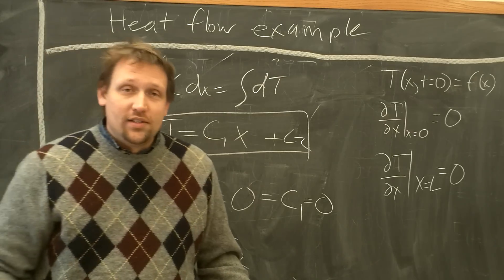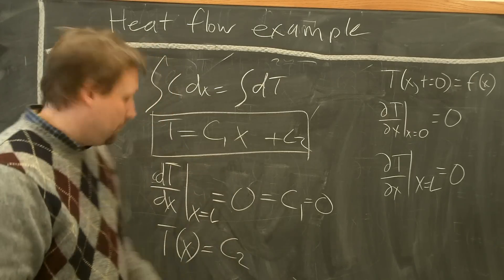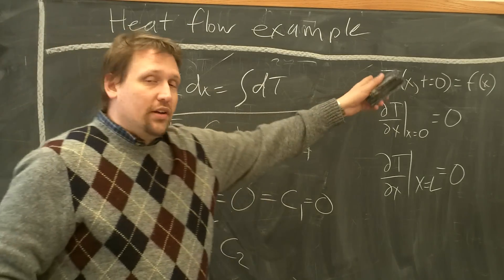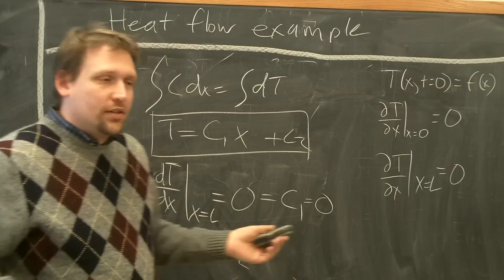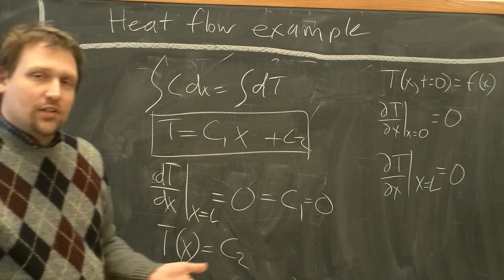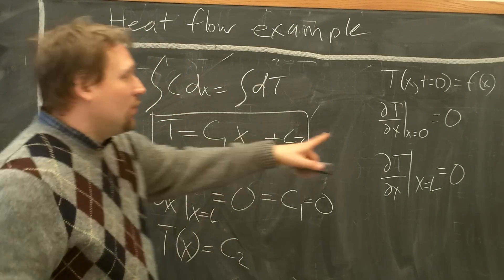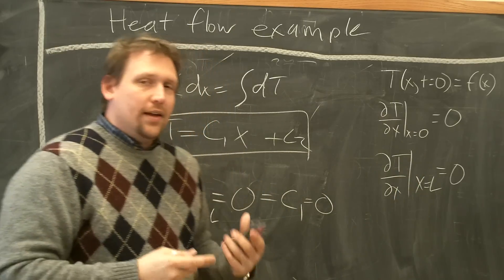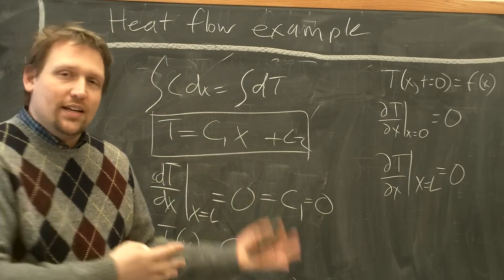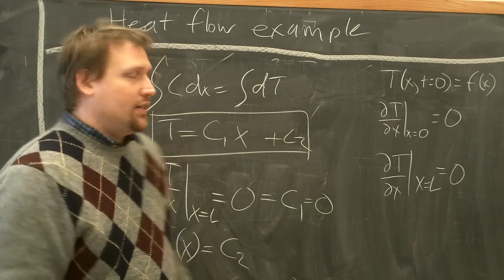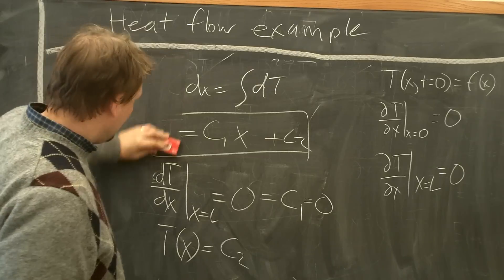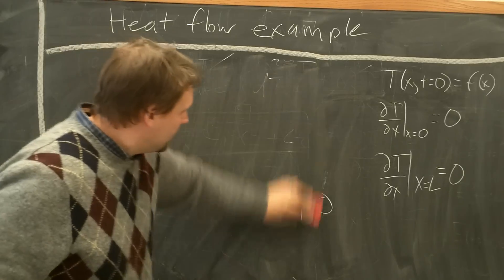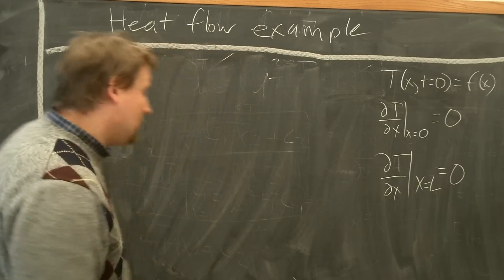Now the question is, what is this constant temperature C2? In order to figure out what C2 is, we have to use the initial conditions, as well as the concept from the first law of thermodynamics, conservation of energy. Since there is no heat energy leaving either end of this virtual rod, then the energy has to be the same at the beginning of the process, as well as at the end of the process. So we're going to work that through now.